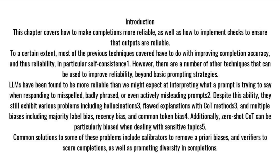LLMs have been found to be more reliable than we might expect at interpreting what a prompt is trying to say when responding to misspelled, badly phrased, or even actively misleading prompts. Despite this ability, they still exhibit various problems including hallucinations, flawed explanations with chain-of-thought methods, and multiple biases including majority label bias, recency bias, and common token bias. Additionally, zero-shot chain-of-thought can be particularly biased when dealing with sensitive topics.